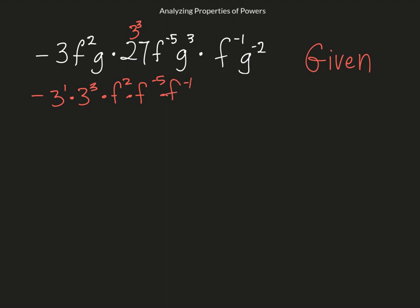times g to the first - since it doesn't have an exponent I'm going to put that one there - times g to the third times g to the negative 2. And that would be my commutative property of multiplication.